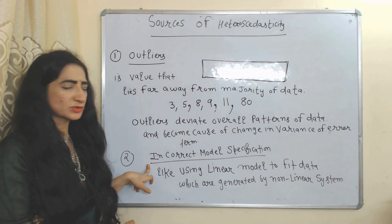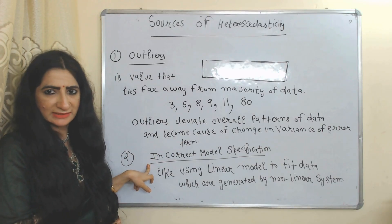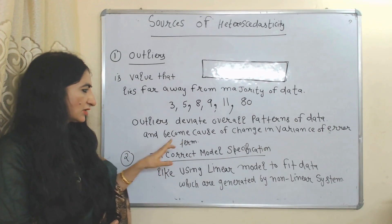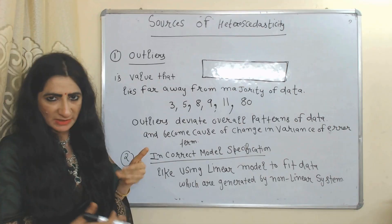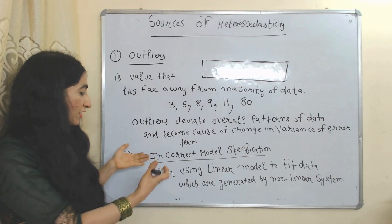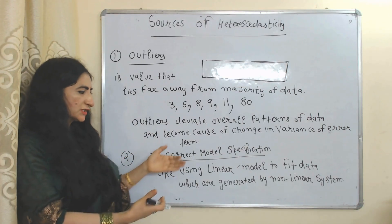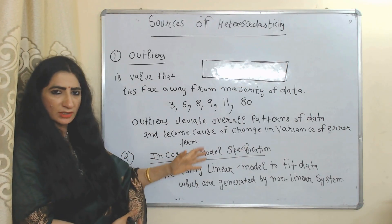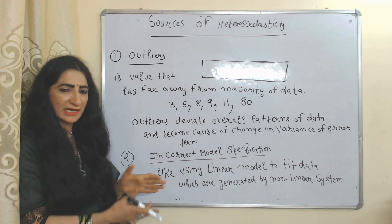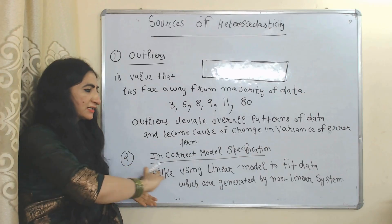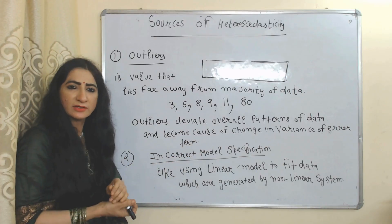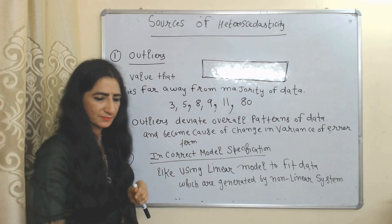The second source of heteroskedasticity is incorrect model specification. For example, you are using a linear model to fit data which was generated by a non-linear error system.